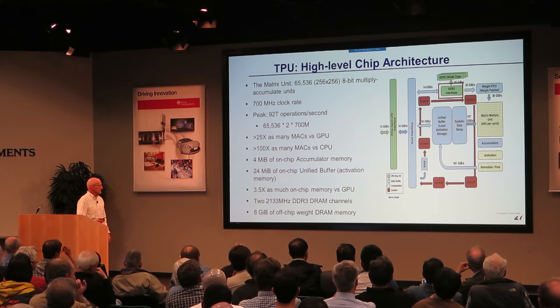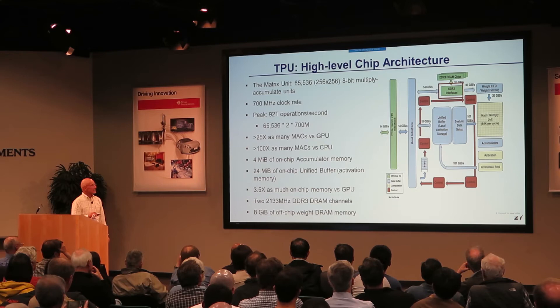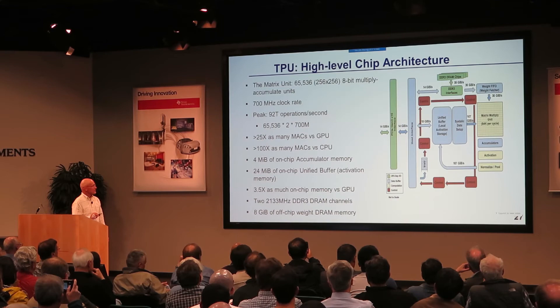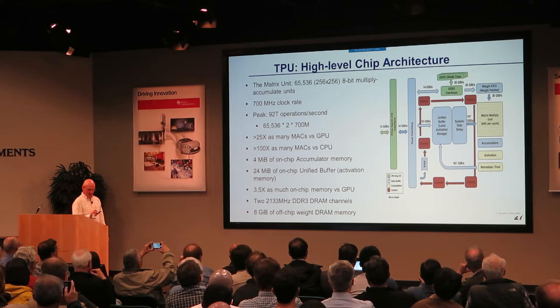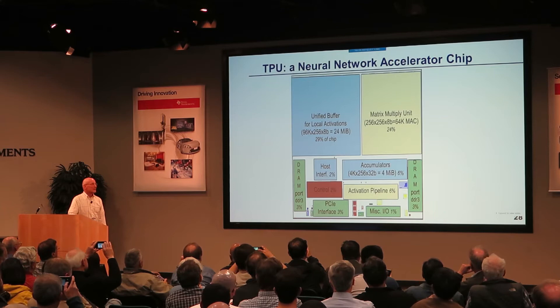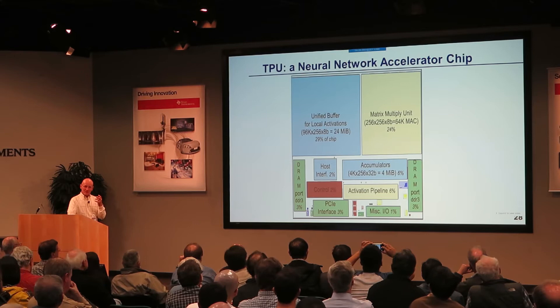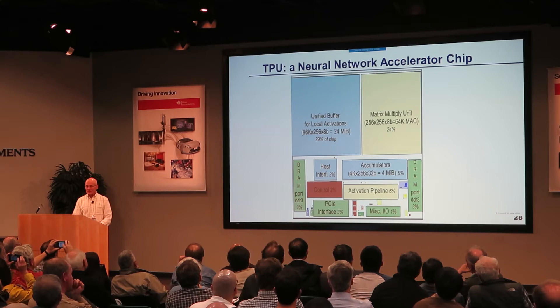Here's the floor plan. The matrix multiply unit is a quarter of the chip — that's the 65,000 MACs. The memory is about a third of the chip. Two-thirds of the chip are just the memory and the multiply unit. Control is only 2% because they have very simple control. The chips of the time in Google's data center in 2015 when the TPU started working were the Haswell generation 18-core CPU and the NVIDIA Kepler GPU — really big chips at about 600 mm². The TPU is about half that size and uses about half the power (150W versus ~75W for the TPU).